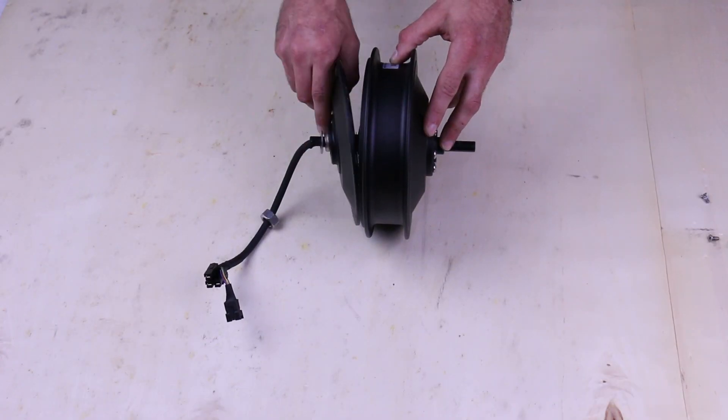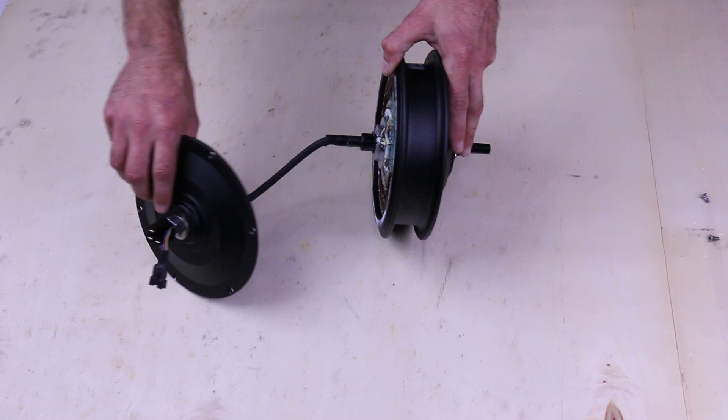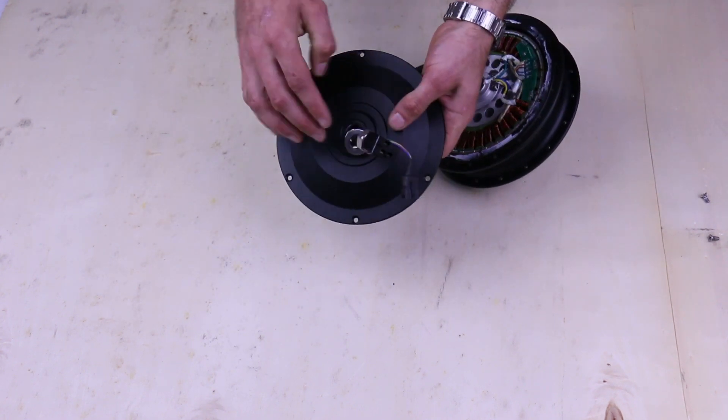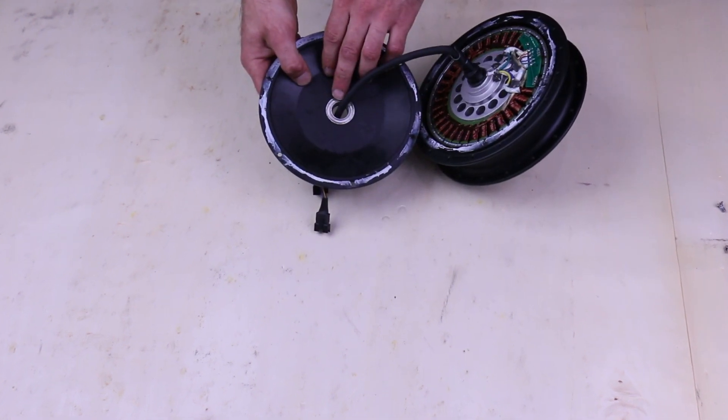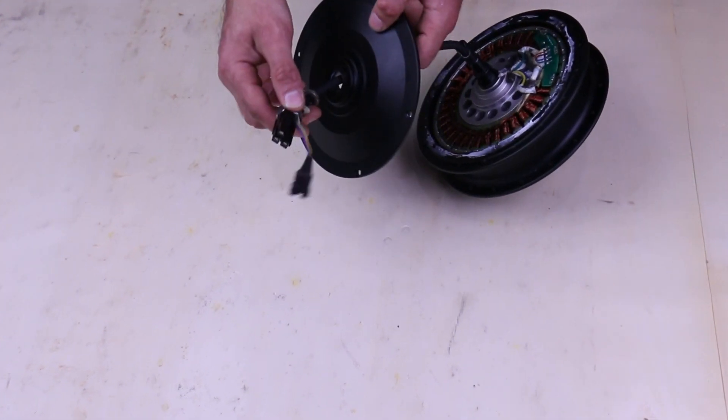Once you've gotten the side plate popped off, you can slide it down the wire. You'll notice that you won't be able to get it off because of the connectors. If you need to service the bearing on the side plate, you'll need to also replace the connectors.